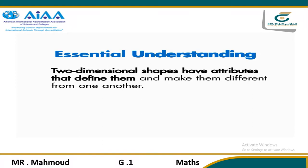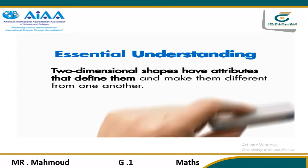Previously, students used attributes such as the number of sides and the number of vertices to define two-dimensional shapes. In this lesson, students extend this work as they differentiate between attributes that do and do not define a shape.